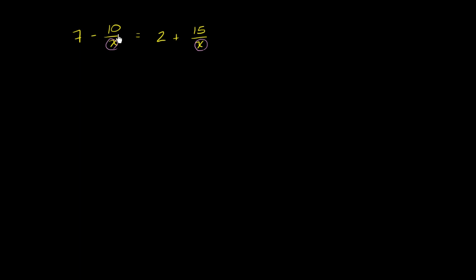But we can't just multiply one of the terms by x. We have to multiply the entire side by x. So we could multiply this entire side by x. But we can't just multiply the left-hand side by x. We'd also want to multiply the right-hand side by x. And so what will that give us?